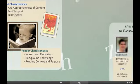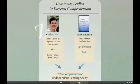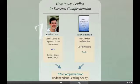How does the Lexile Framework help forecast comprehension? Once a student knows their Lexile Measure, they can select texts according to their Lexile Range, which is 100 Lexiles below to 50 Lexiles above their actual measure. Our research indicates that reading in this range — minus 100 to plus 50 — will yield about a 75% comprehension rate. This level of comprehension offers students just enough challenge to grow as a reader, but avoids the frustration that would lead a reader to give up on a text or to associate reading with difficulty.